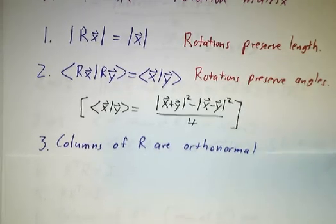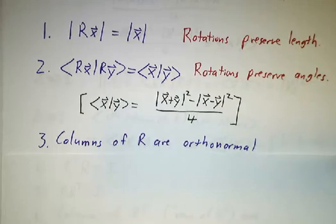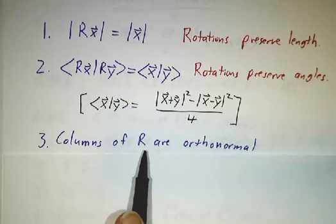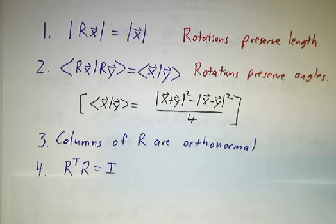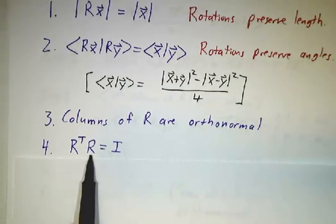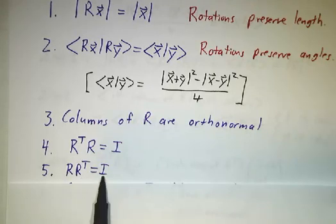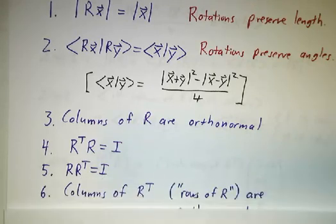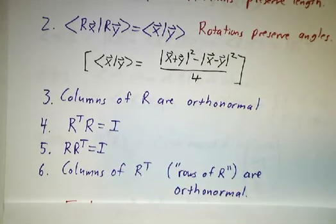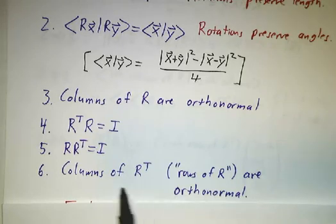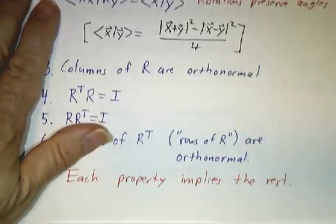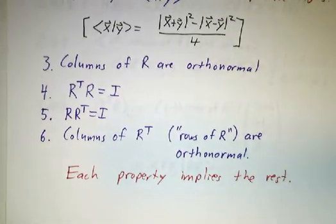The remaining properties are a bit more subtle — they have to do with the matrix itself. If you look at the columns of the matrix, all of the columns are orthonormal, and the transpose of the matrix times the matrix is the identity. In other words, the transpose is the inverse of the matrix. Likewise, R times its transpose is the identity, and the columns of the transpose — which you might think of as the rows of R — are also orthonormal. Any matrix that has one of these properties automatically has all of the other properties as well.